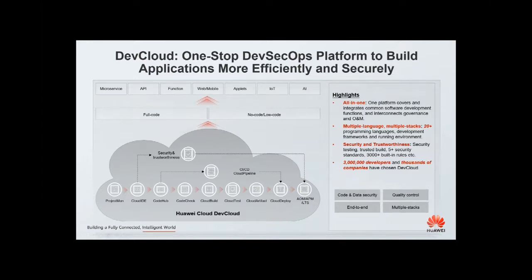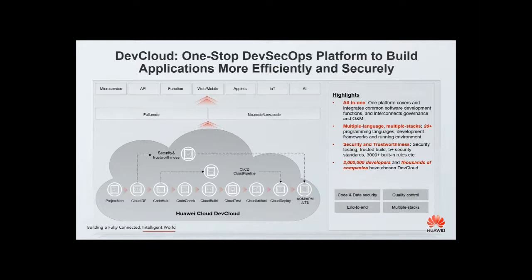Our platform is all about flexibility. Whether you are a traditional developer or otherwise, you can always trust DevCloud to build what you need. We support both low-code and full-code development approaches with rich preset templates and components. No matter what applications you are building — microservices, API, function, web, mobile — DevCloud seamlessly integrates with other services in the Huawei Cloud ecosystem, like ServiceStage and FunctionGraph to support deployment of serverless functions and microservices. We also support embedded systems, AI, and more. You can go from idea to final application on DevCloud.